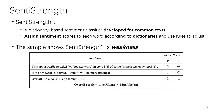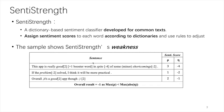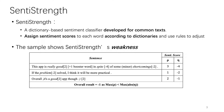SentiStrengths is a dictionary-based sentiment classifier which is developed for common texts. For the input texts, SentiStrengths will assign sentiment scores to each word according to its dictionaries and use rules to adjust the results. However, since SentiStrengths is not customized for SE texts, its performance on SE texts is not good. The table shows example SE texts that tools easily label wrongly. The example is manually labeled as positive but classified as negative by SentiStrengths because it assigned a negative score to the word 'spite' and couldn't recognize the turning relationship.